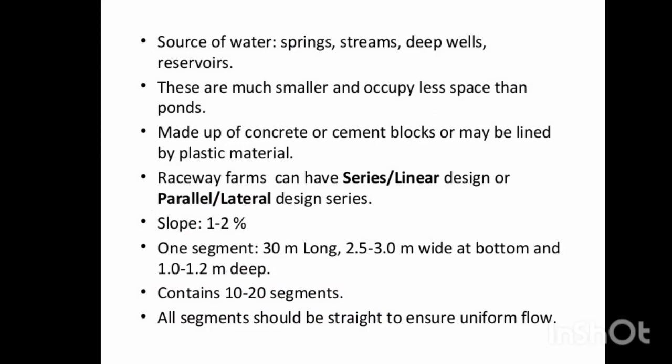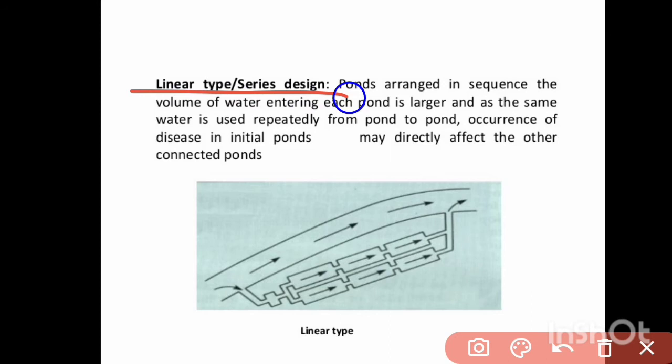In the series type arrangement, ponds are arranged in sequence. The volume of water entering each pond is larger, and the same water is used repeatedly from pond to pond. A disease occurring in initial ponds may directly affect the other ponds, since water transfers directly from one pond to the next.